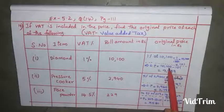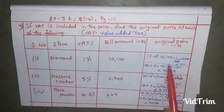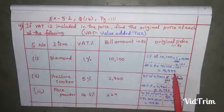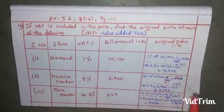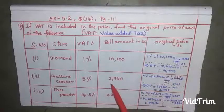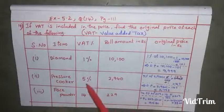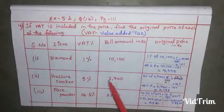So the original price of diamond is 10,100 minus 101, which equals 9,999 rupees. Next, for the pressure cooker, the bill amount is 2,940 and the value added tax is 5%. We subtract 5% VAT from 2,940.